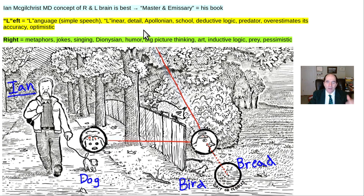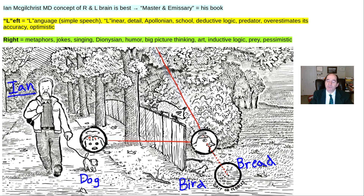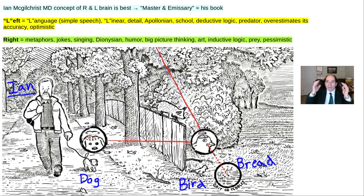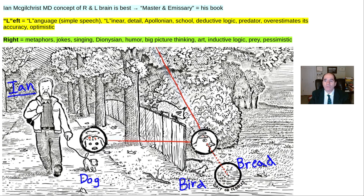The left brain handles simple speech — 'please pass the salt.' The right brain handles jokes, rhymes, metaphors, like a Rodney Dangerfield joke. When someone has a left brain stroke, they may lose regular language ability but can still sing. Both hemispheres are important for language but in different ways — the left for direct speech, the right for metaphors, jokes, and music.